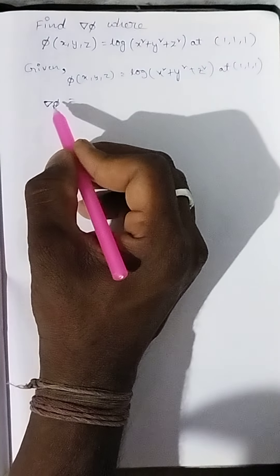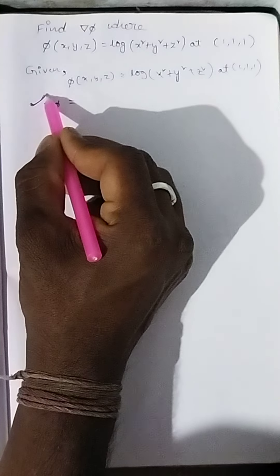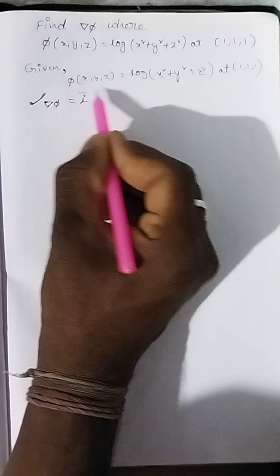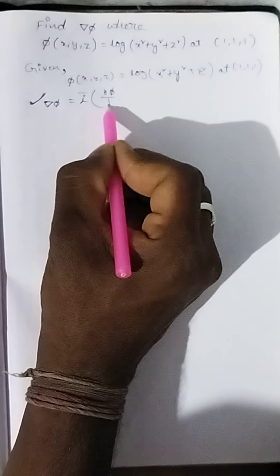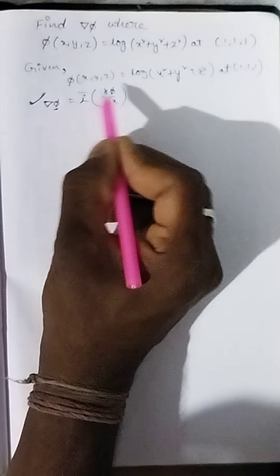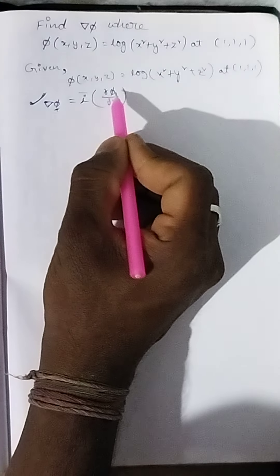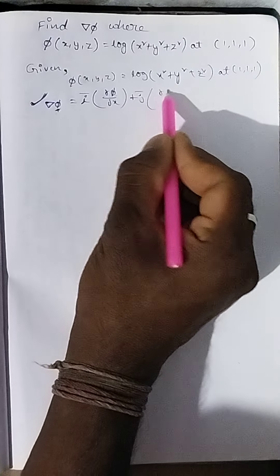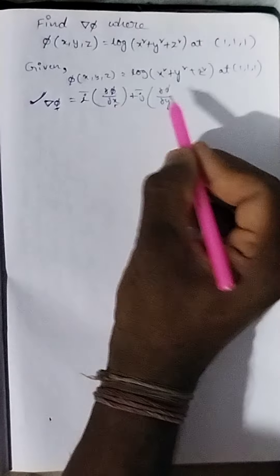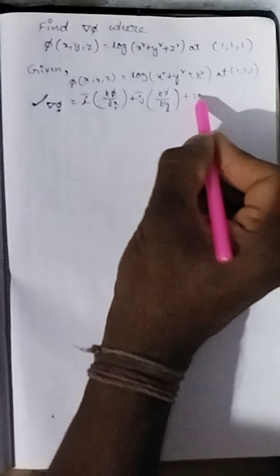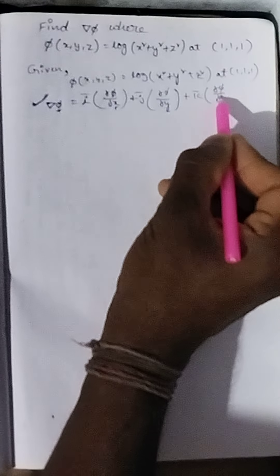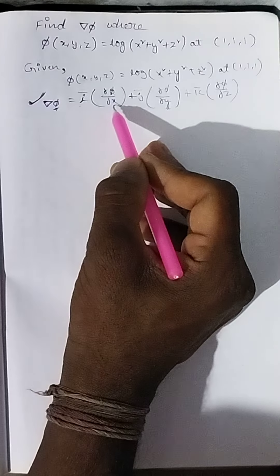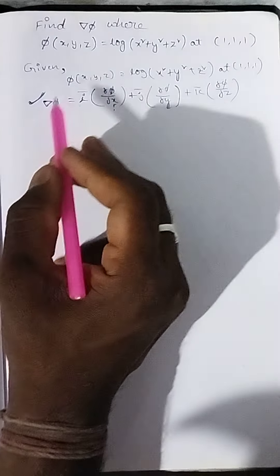Del φ is a very very important formula. The del φ formula is: del φ = i-bar ∂φ/∂x + j-bar ∂φ/∂y + k-bar ∂φ/∂z. Remember the alphabetical order: i, j, k and x, y, z. So we apply this formula to find del φ.